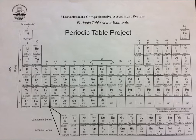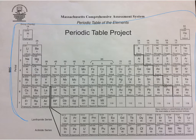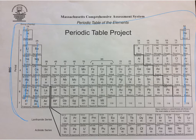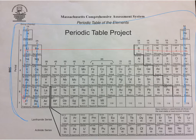The periodic table was built based on a couple of different groups of properties. Within each column, going up and down, the elements have properties that are similar. These are called families or groups — elements that are similar in terms of how they react with things or don't react. And there are trends: as you go across each row, and also as you go down within each group, certain things happen.